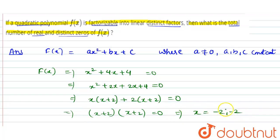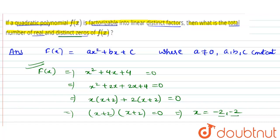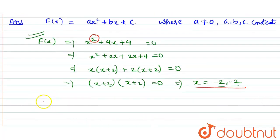The value of x is -2 and -2. We have two values of x, but these are not distinct — they are equal to each other. We have to find the number of real and distinct zeros, so this example gives real but not distinct zeros. From this, we get to know there are total two possible zeros for a quadratic polynomial.